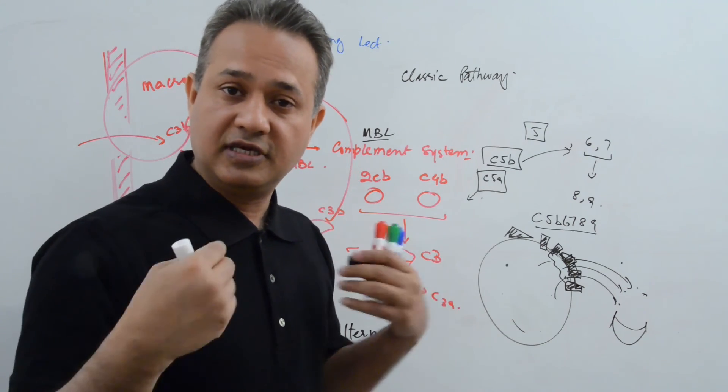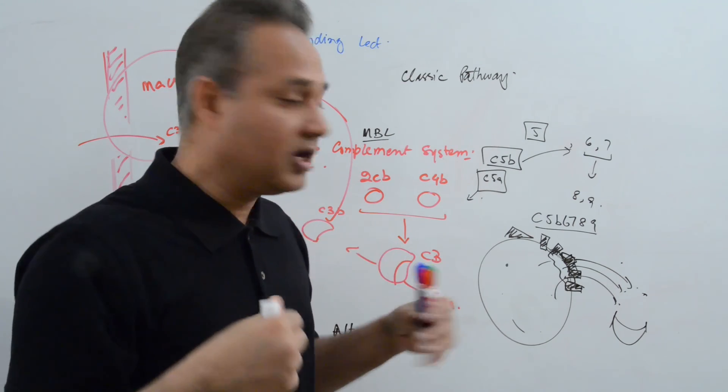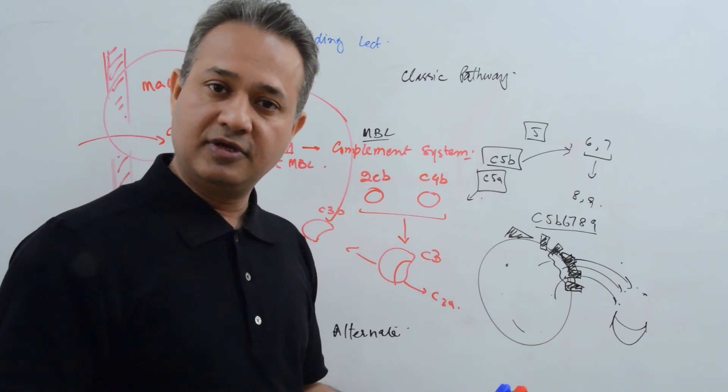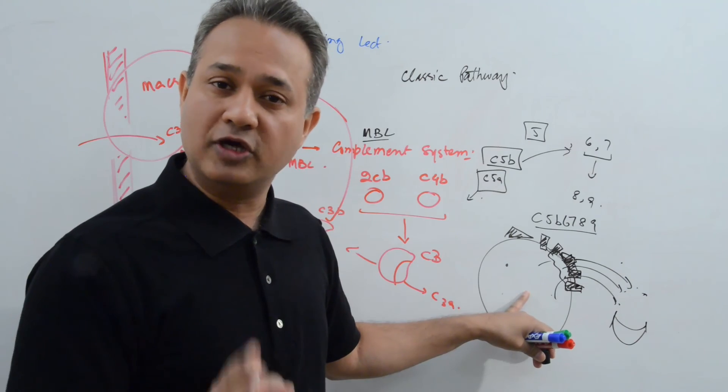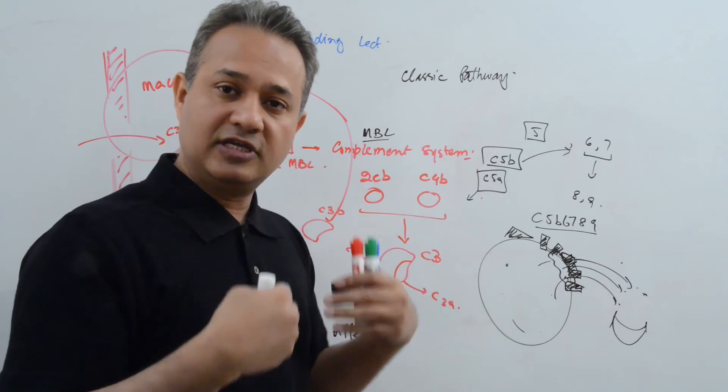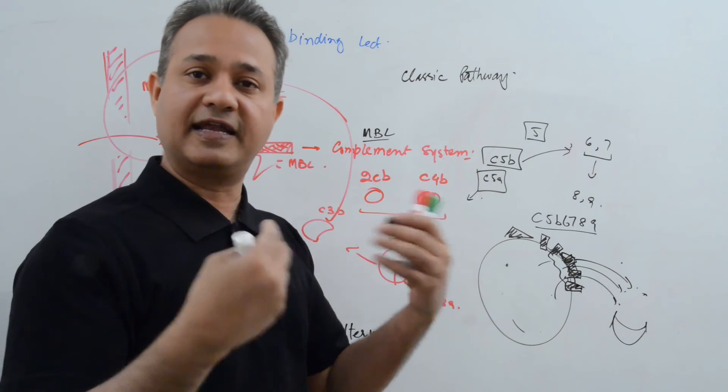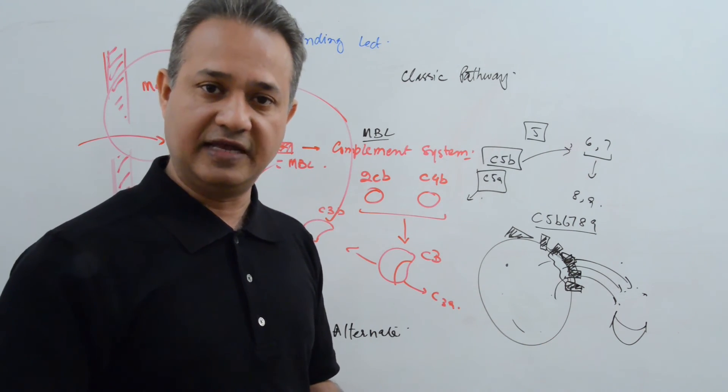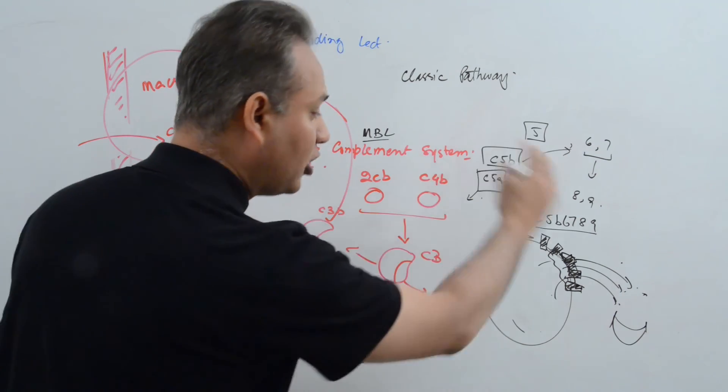That is how the membrane attack complex works. And in pathologies, in our own pathologies where our body goes wrong, this membrane attack complex can actually attack us as well, our cells as well, and it can break them. But when the immune system goes wrong, it can actually create membrane attack complexes that can attack our own cells and kill them. And that is how many autoimmune diseases can occur. So anyways, this is the complements pathway.